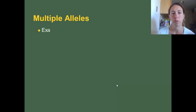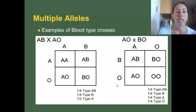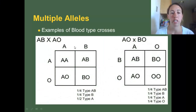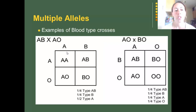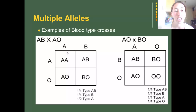Here's how multiple alleles work with blood types. Looking at this Punnett square, if one person has AB and another person has AO, their children could have either AA, AB, AO, or BO. This is different from a normal Punnett square where you would only have two alleles — you'd either have only A and B, or A and O — you wouldn't have AB and O as a possibility.